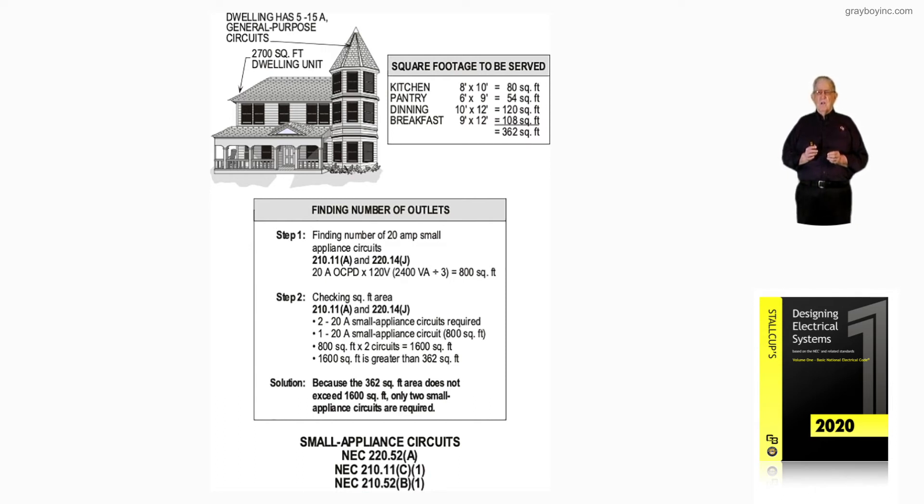Notice if you have two small appliance circuits, 20 amps each. Each one, we just calculated in step one, is 800 square foot.